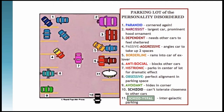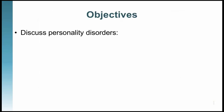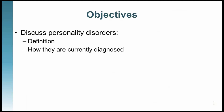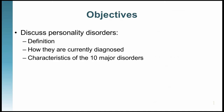I'll talk about each of these different disorders in detail in part two of this lecture. In this lecture, I want to discuss the definition of personality disorders, the current state of diagnosis, and the problems with comorbidity — which means that if you're diagnosed with a personality disorder, it's likely you have more than one, even up to five different personality disorders at the same time, due to significant overlap between disorders.